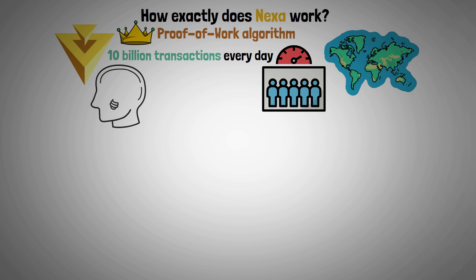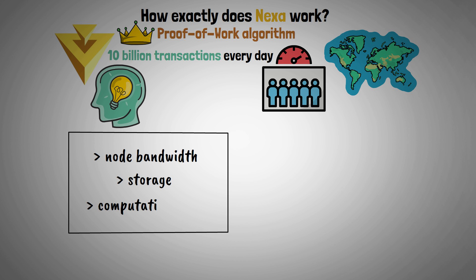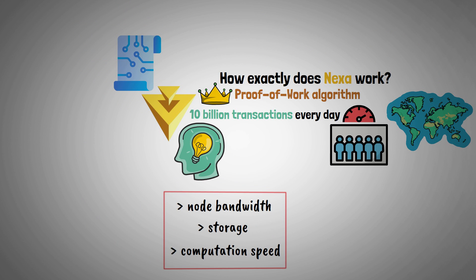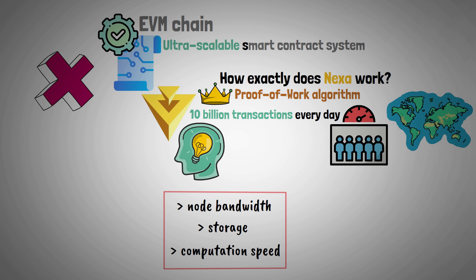It makes use of cutting-edge technology to eliminate node bandwidth, storage, and computation speed constraints. Additionally, Nexa uses an ultra-scalable smart contract system that enables nearly all of the functionality of an EVM chain without the serious scaling issues that other networks have.